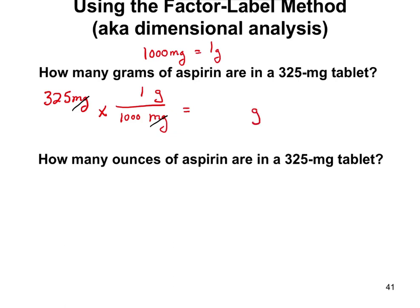Then we do the math: 325 times 1 in the numerator, divided by 1,000 in the denominator. That gives us 0.325 grams. So we have 0.325 grams of aspirin in that 325 milligram tablet.